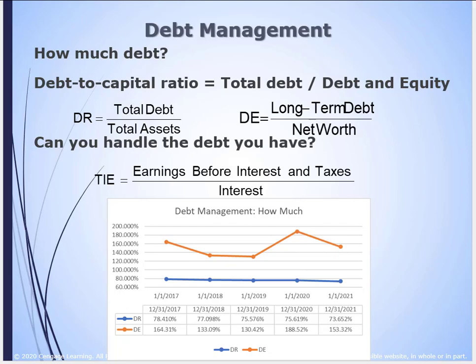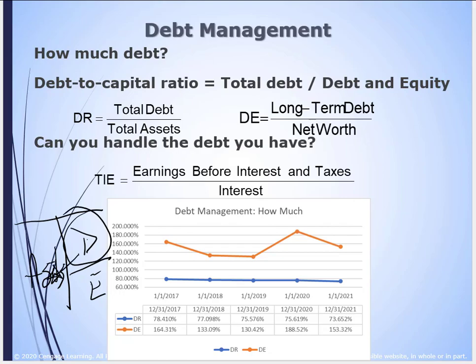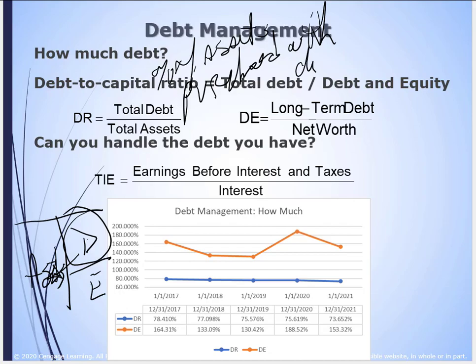The first ratio is the debt ratio (DR): total debt divided by total assets. If you think about a balance sheet, on one side are all the assets — the things we've purchased — and on the other side we have debt and equity. This tells us the percentage of assets purchased with debt. The alternative is the percentage of assets owned by shareholders. It will be somewhere less than 100%; the bigger the number, the greater the debt.